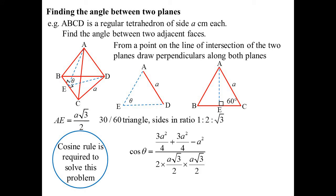Now, I'm going to have to use the cosine rule to go and solve this problem now. So cos theta will be 3A squared on 4 plus 3A squared on 4, so AE squared. DE is going to be the same length because of them all being the same equilateral triangle, minus A squared over 2 times A root 3 on 2 times A root 3 on 2. I end up getting cos theta is a third. So we get 70 degrees 32 for the angle theta.